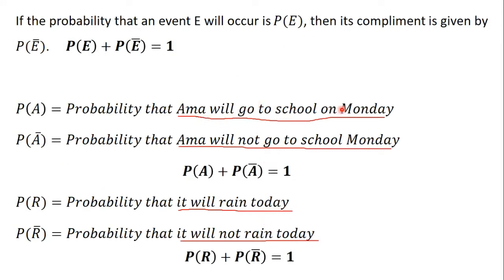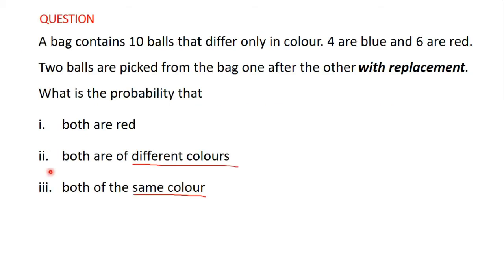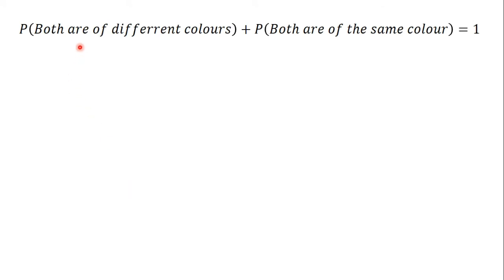Both balls are of different colors, and both balls are of the same color — the second statement is the exact opposite of the first. Just as with the previous examples, the probability of the first statement plus the probability of the second statement will give us 1. So: probability that both balls are of different colors plus probability that both balls are of the same color equals 1.